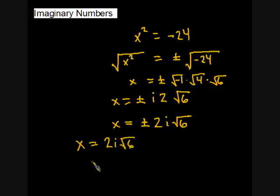x equals 2i root 6. And a whole other solution, x equals negative 2i root 6. Now, I'm calling these solutions because if I took 2i root 6 and plugged it in here for x and squared it, I would get negative 24. And same with negative 2i square root 6. If I squared that, I would get negative 24.